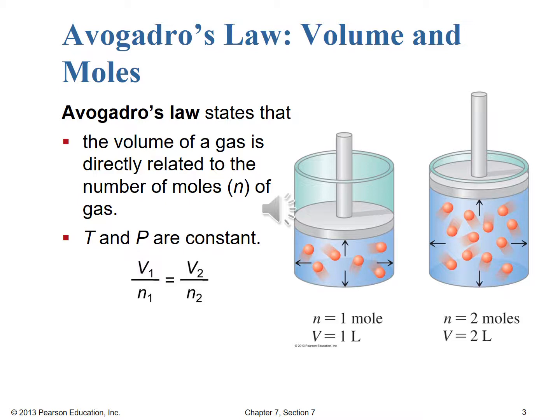Just like those other direct relationships we saw for Charles's Law and Gay-Lussac's Law, Boyle's Law had pressure and volume as a direct relationship, so that was the only one with a different form. In the picture on the right, one mole of this arbitrary gas occupies one liter of volume at whatever the constant temperature and pressure conditions are. If we hold temperature and pressure constant and add another mole of that same gas, the volume doubles. If we double the number of moles, we double the volume because it's a direct relationship.